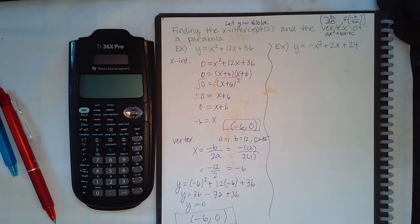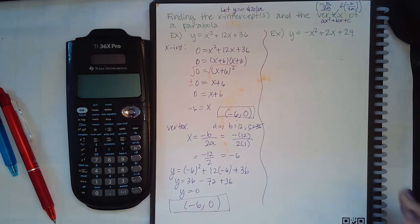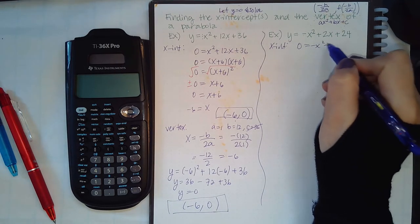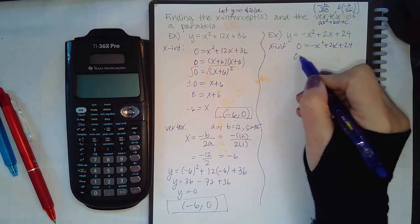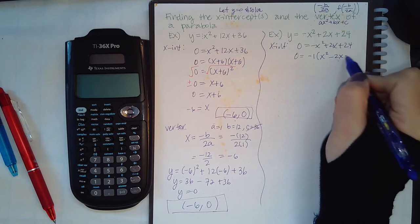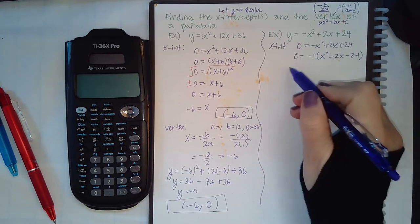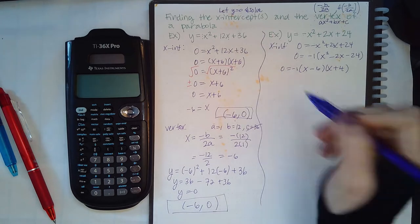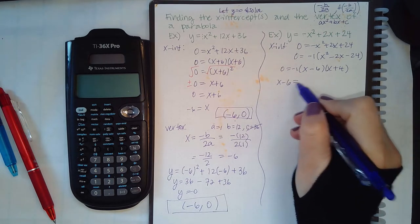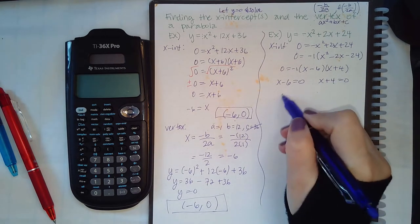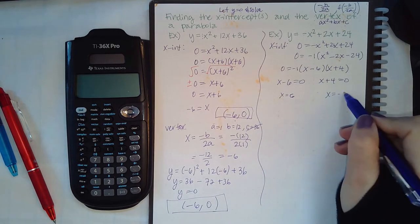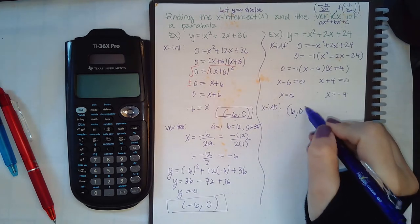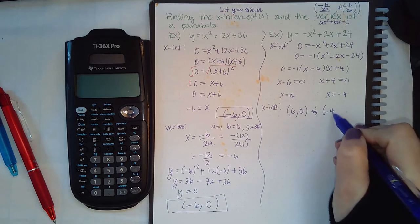So this x-intercept also happens to be the vertex — they're not always the same value, it's just coincidence in this problem. For the next example, to find the x-intercepts we make y equal to 0. Since the first term is negative, we factor out that negative, which changes the signs. Then factoring further gives negative 1 times x minus 6 times x plus 4. This gives x equals positive 6 and x equals negative 4, so the two x-intercepts are 6 comma 0 and negative 4 comma 0.